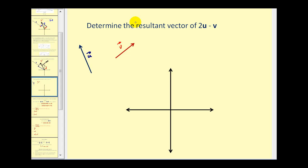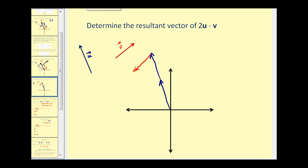Now let's take a look at subtraction. Notice on this problem we want to find two times vector U minus vector V. Two times vector U means we'll sketch this as a position vector but double the magnitude. So if this is U, this would be 2U. Because we're subtracting V, we'll graph V in the opposite direction. So the resultant, using the triangular method, would be the vector that starts at the origin and has its terminal point here — two times vector U minus vector V.